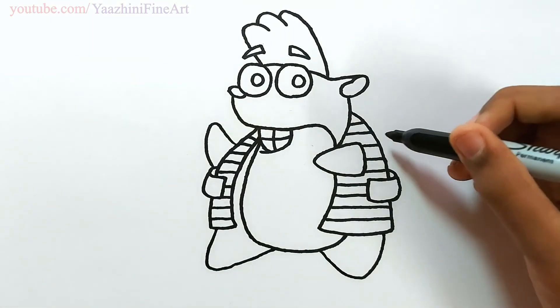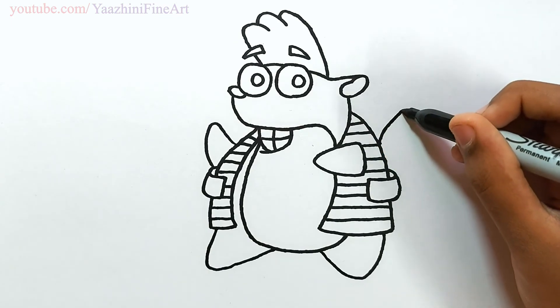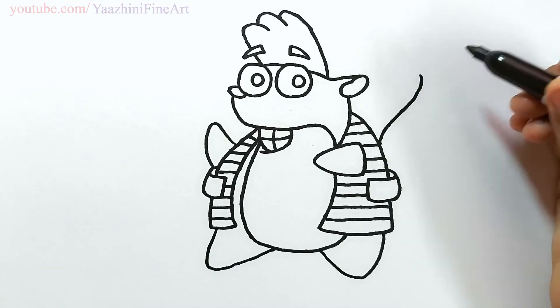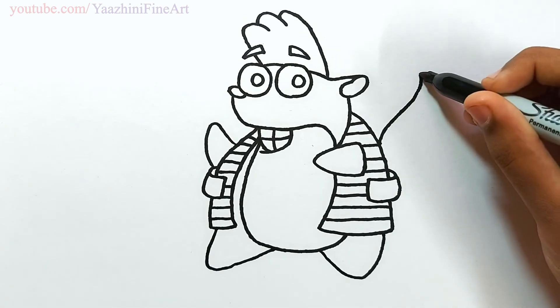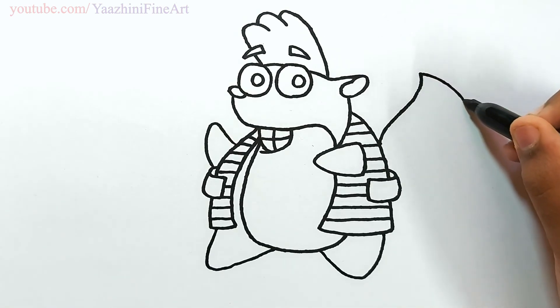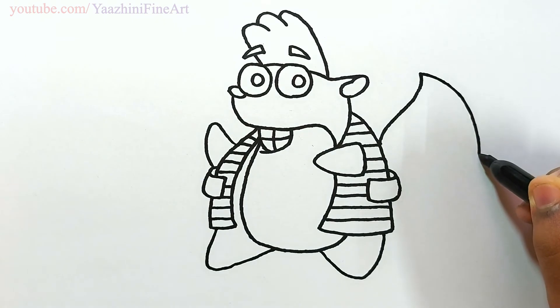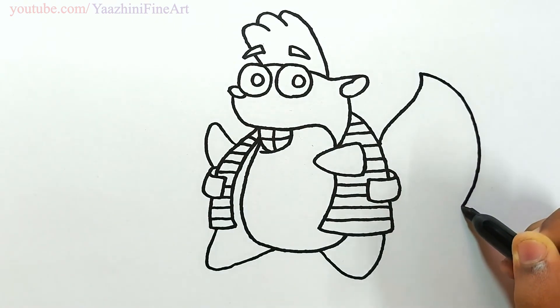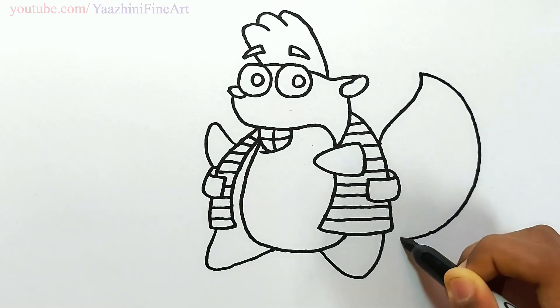Draw his tail. From there, go out, curve it, stop over there, and then come down. Join it.